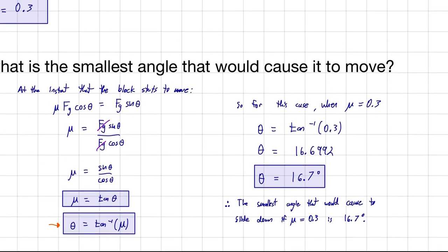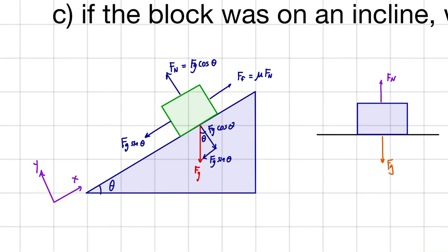Now does this make sense? Let's take a look. So we've got a block and we've got a ramp. And if theta, that angle there, is less than 16.7, so less than that's going to be somewhere around here, the block's not going to move.